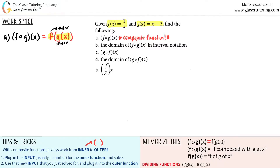Composite functions might look scary, but they're not. All we do is a two-step process. Step one: plug in the input for the inner function and solve. The inner function here is g of x. They're telling me to plug in x, and g of x equals x minus 3, so I write x minus 3. I can't simplify this, so I hold this value and move to step two.